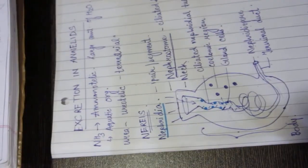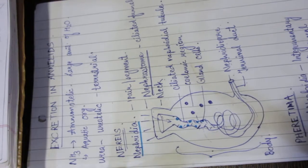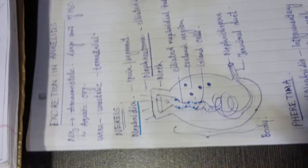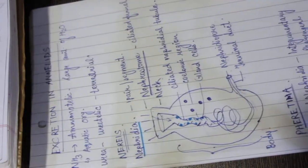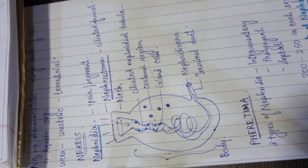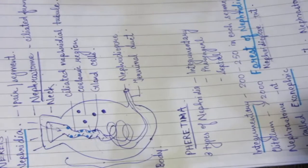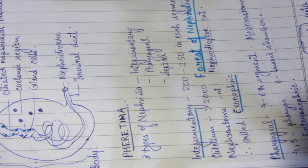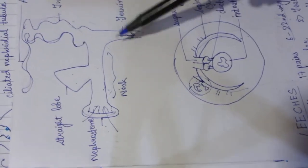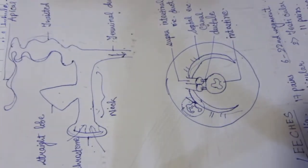This was all about excretion in annelids. To summarize: the excretory organ is nephridia; know which organisms have nephrostome present and which have it absent; the clitellum region is the Forest of Nephridia; and septal nephridia is the largest, called exonephric because it directly excretes waste. The detailed pathway of septal nephridia is just for knowledge, not required for exams.